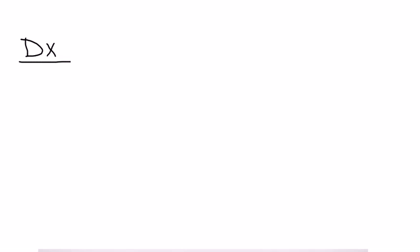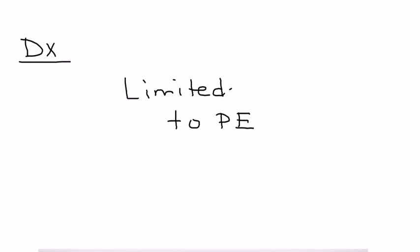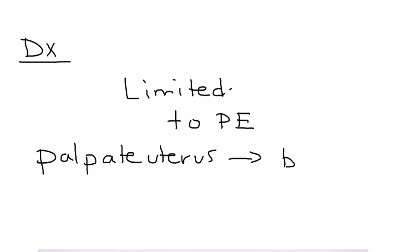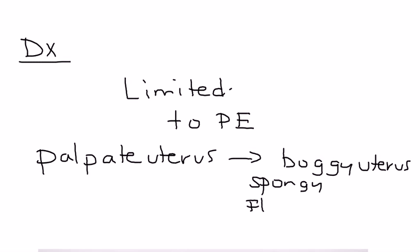In this urgent scenario, diagnosis is initially limited to physical exam. You palpate the uterus, feeling for a boggy uterus - one that feels spongy or flaccid - essentially a uterus with reduced muscle tone. Once the patient stabilizes, you proceed with more diagnostic testing.